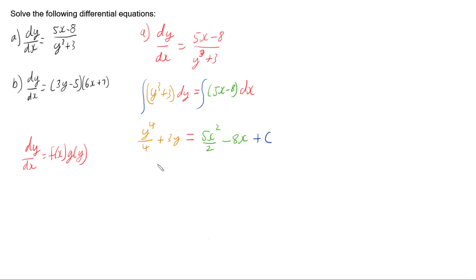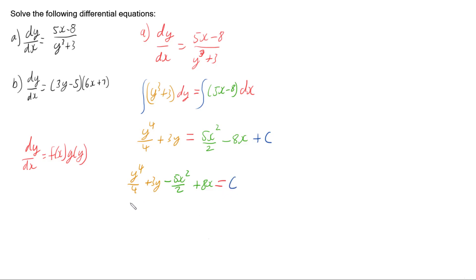This equation is going to be really hard to isolate a single y and have y equals stuff in terms of x, so I'm going to write it as an implicit function. Subtracting 5x squared over 2 and adding 8x to both sides, moving everything to one side except the constant, gives us: y to the 4 over 4 plus 3y minus 5x squared over 2 plus 8x equals c. That's all we can do here — if you wanted to recover the derivative, you'd have to differentiate implicitly.